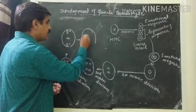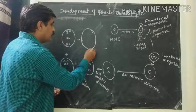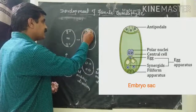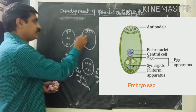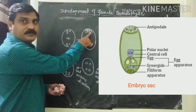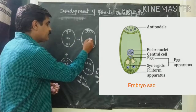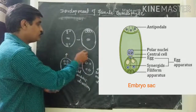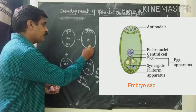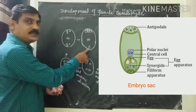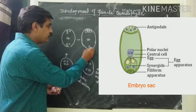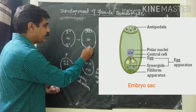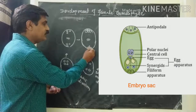Now organization of the embryo sac takes place. Wall formation and cytokinesis takes place. Towards the chalazal end, three cells undergo wall formation. In the middle, a diploid cell is formed prior to fertilization — that is the polar nuclei. Towards the micropylar end, there is a group of three cells: the middle cell is large and the two supporting cells are small. The large middle cell is the egg cell, which is haploid, and the two supporting cells are known as synergids.